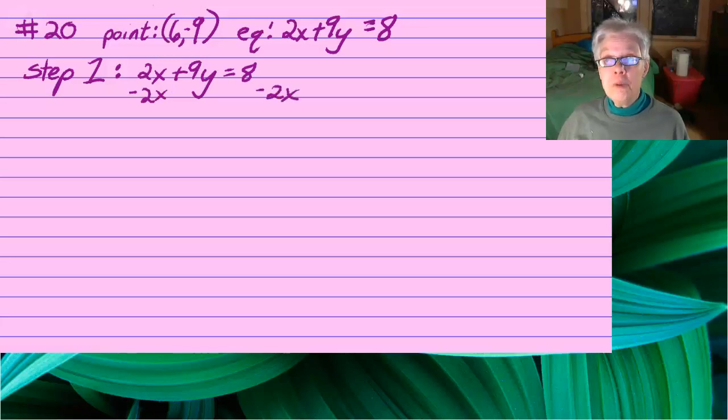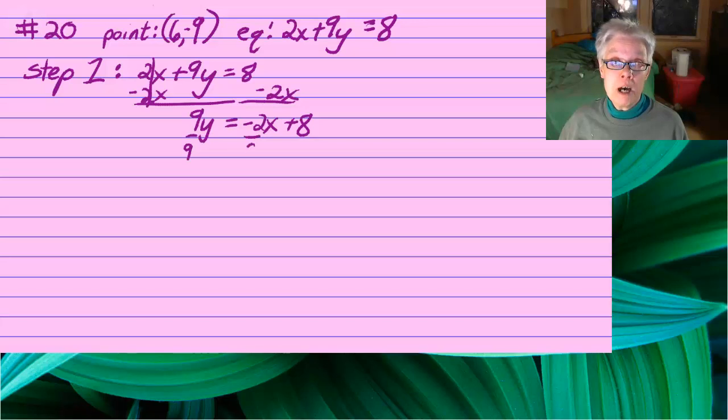And the way we're going to do that is we're going to solve for y and get it in slope-intercept form. So we'll have 9y equals negative 2x plus 8, and we will divide by 9, all three numbers separately.